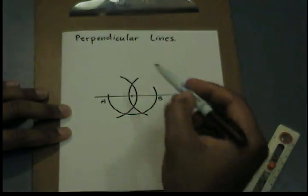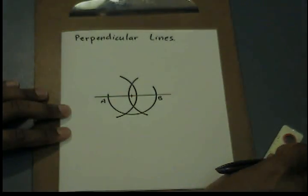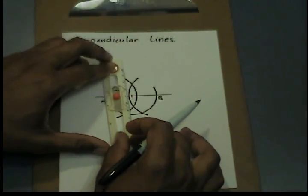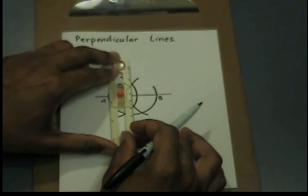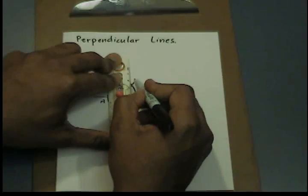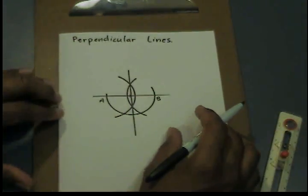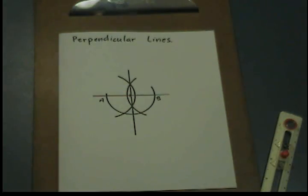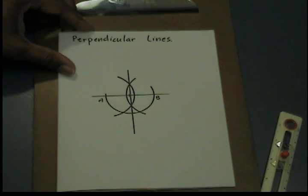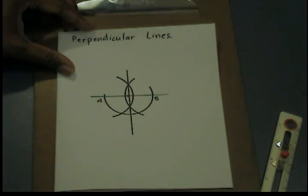I'm going to draw a line through where both arcs intersect. Now we have created a perpendicular line using a point on the line. The last type of perpendicular line we need to be able to form is a perpendicular line using a point not on the line.